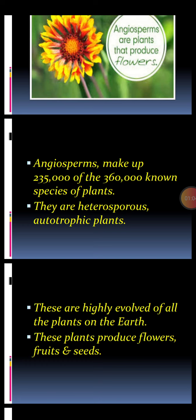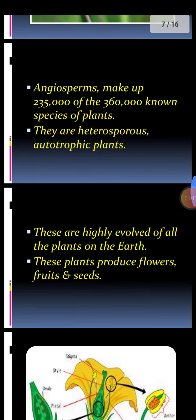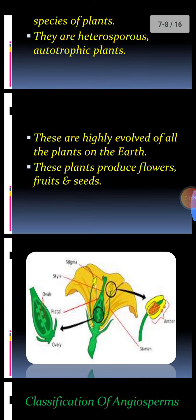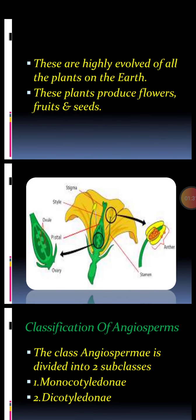Angiosperms are heterosporous — that is, they produce different kinds of spores — and they are autotrophic plants, having pigments to prepare their own food by photosynthesis. They are the most highly evolved of all plants on Earth and are well developed. These plants produce flowers, fruits, and seeds.